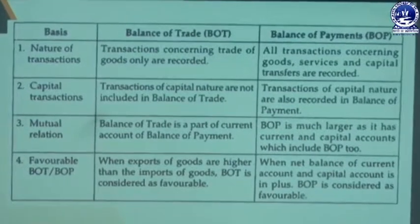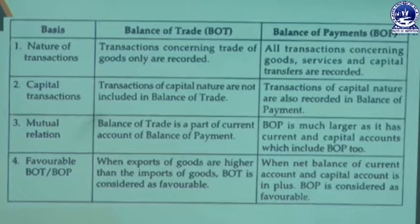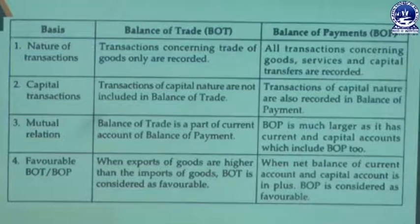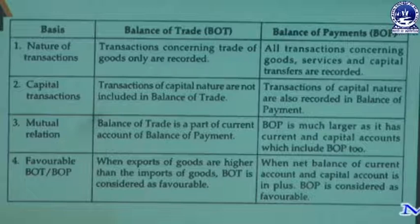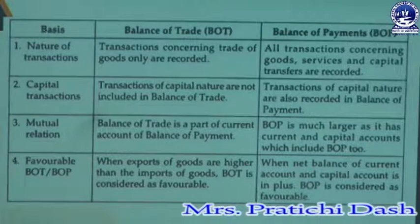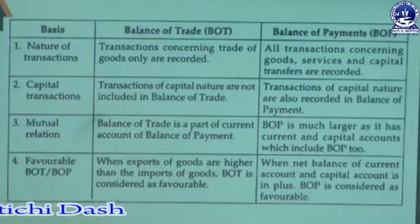The differences between Balance of Trade and Balance of Payment are based on several criteria: nature of transactions, capital transactions, mutual relation, and favourable balance. According to the nature of transactions, Balance of Trade records only trade of goods, while Balance of Payment records all economic transactions of a country with the rest of the world.